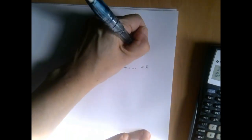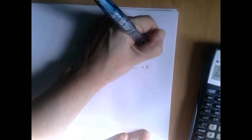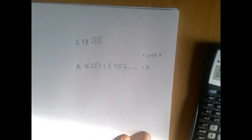So we're going to multiply both sides of this equation by a thousand. So x will become a thousand x. And now what happens to this number when we multiply it by a thousand?